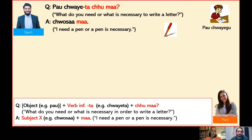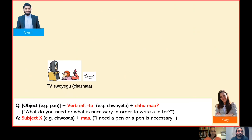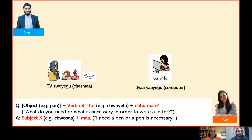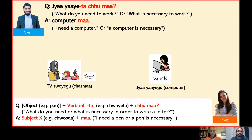Shall we practice a bit? Sure. I'll show you some pictures. Please answer according to the hints provided. For example, TV sweegu and chasma — 'to watch TV' and 'glasses'. I can ask: TV sweeta chuma — 'What do you need to watch TV?' Chasma ma — 'I need glasses'. Correct. And the next one: jayaegu and computer — 'to work' and 'computer'. I can ask: jayaegu ta chuma — 'What do you need to work?' Computer ma — 'I need a computer' or 'a computer is necessary'.